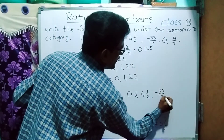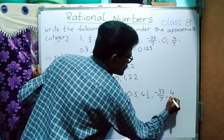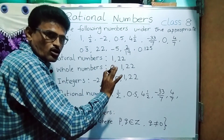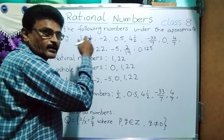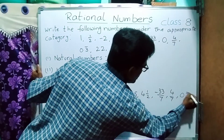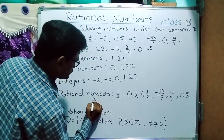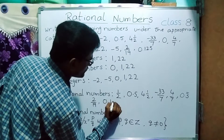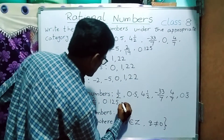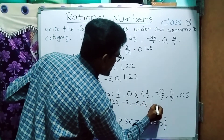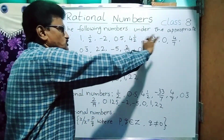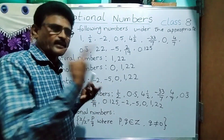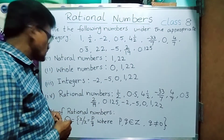Minus 33 by 7 is a negative rational number; 4 by 7 is also in p by q form and is rational. 0.333... is a non-terminating repeating decimal — it is also a rational number. 0.34, 2 by 19, and 0.125 are also rational numbers. So all numbers given in this list are rational numbers. Numbers which are not able to be written in p by q form are irrational numbers, but here all are rational numbers.